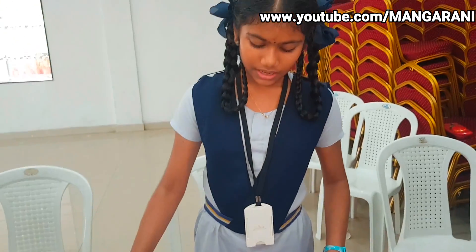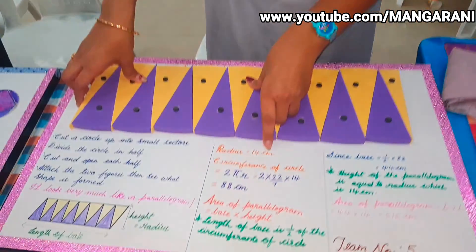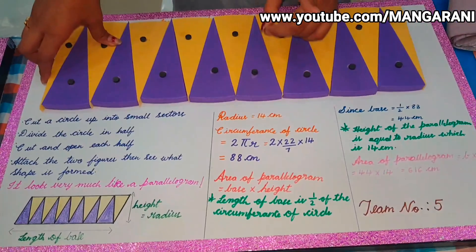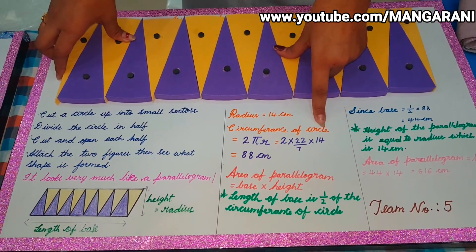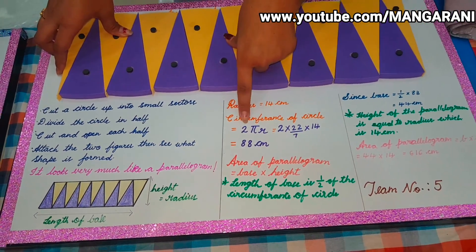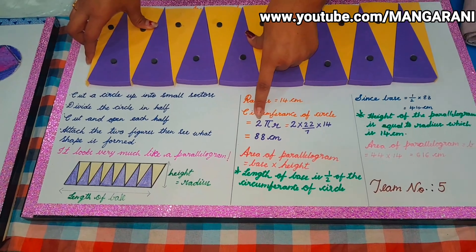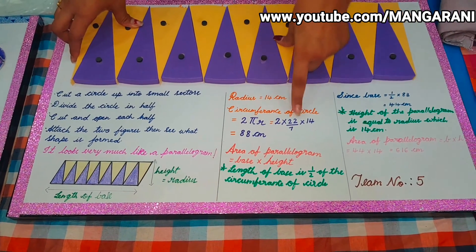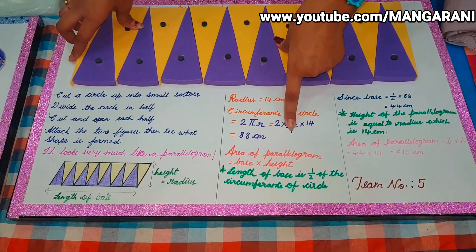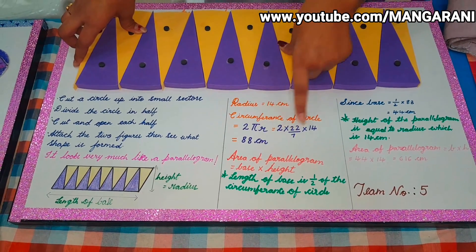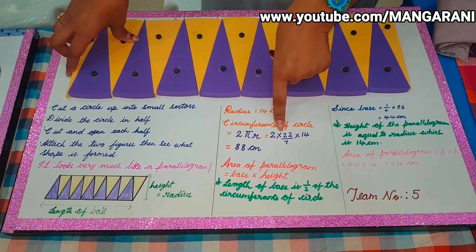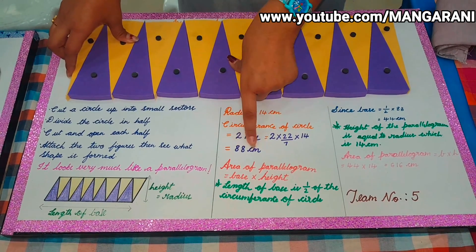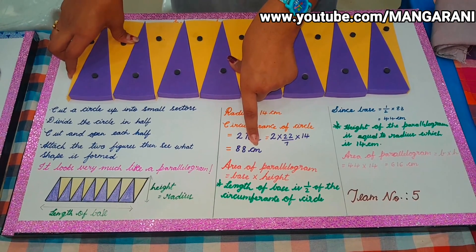The radius of the circle is 14 cm. Step 1: Circumference of the circle, which is 2πr — 2 into pi value 22/7 and radius is 14 cm. When we multiply, we will get 88 cm.